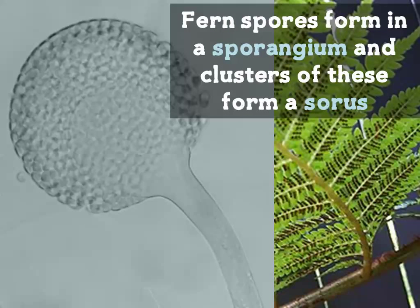Fern spores form in a structure called a sporangium. When clusters of sporangia appear on the leaves, they form what's called a sorus — multiple clusters are called sori, the Latin plural. Sori are usually located on the underside of the fronds, as shown in this picture.